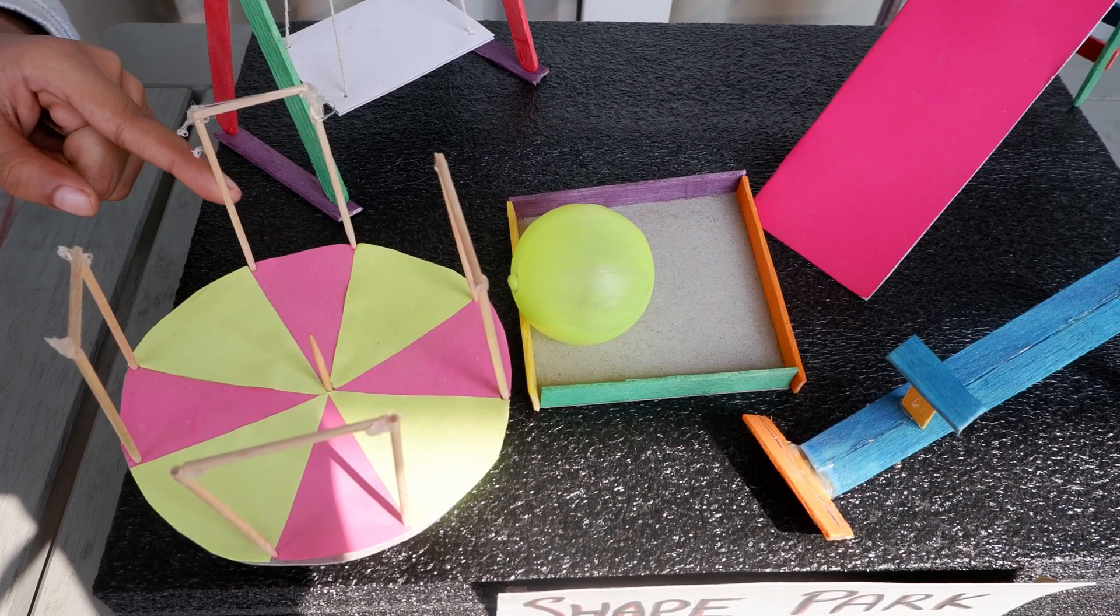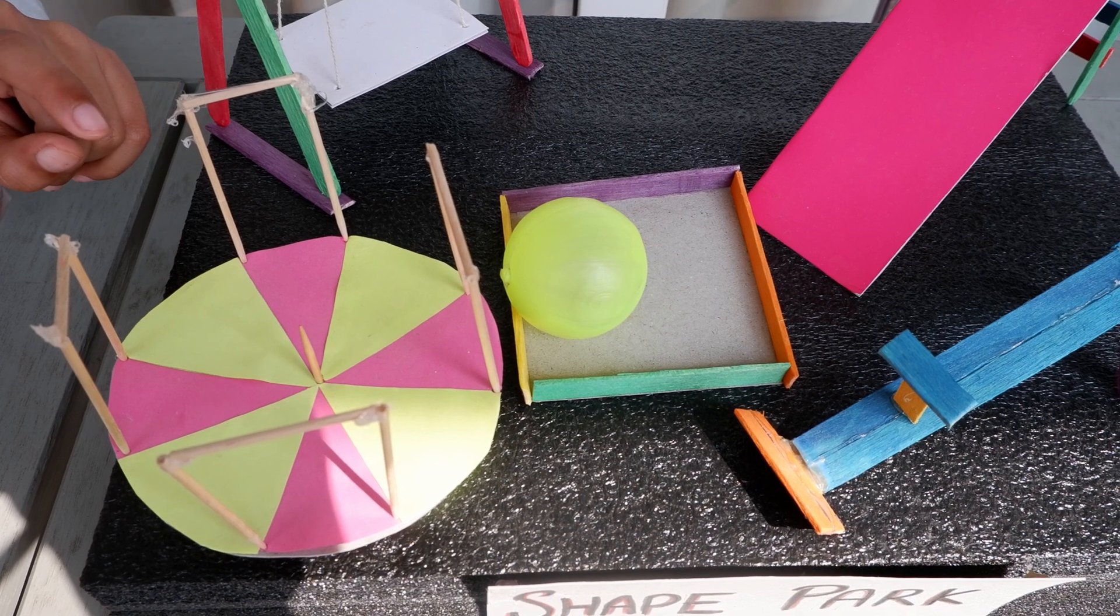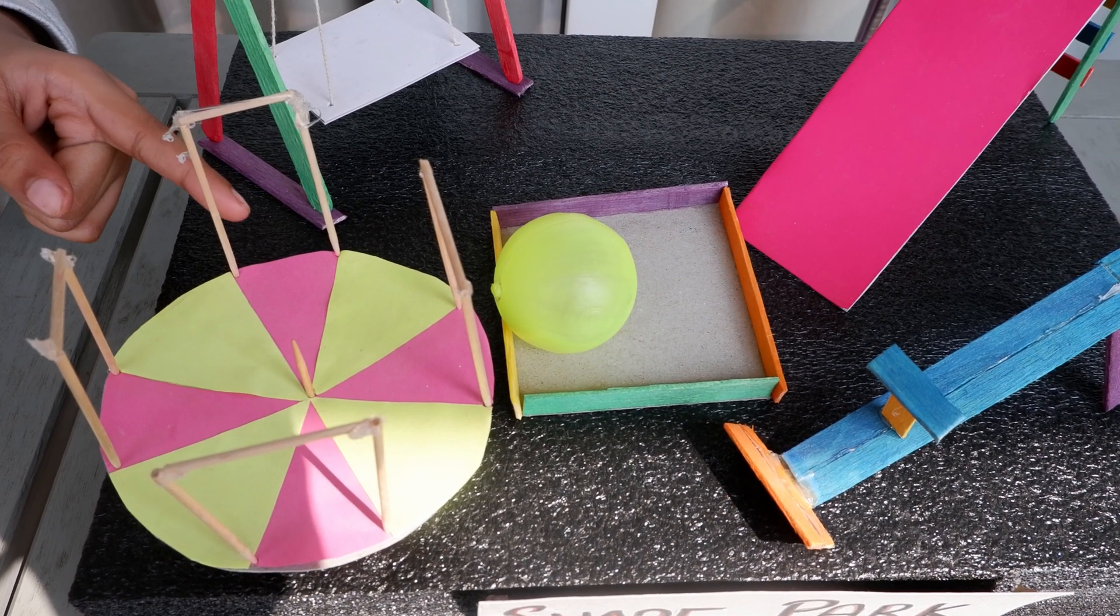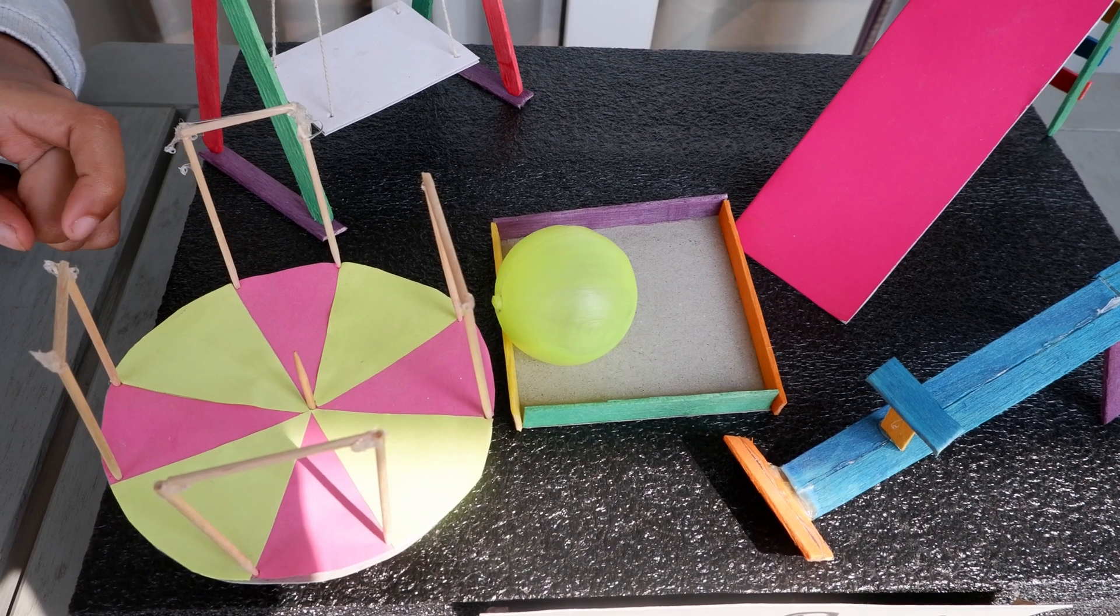And the handle of the merry-go-round is shaped like a cylinder. A cylinder has three faces and two edges and zero vertices.